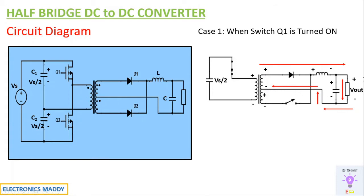If you carefully observe, you're getting a DC voltage at the output terminal. Our desired operation is achieved — we are using a DC voltage source and we are getting a DC voltage at the output terminals. Now what happens if we do the same thing with respect to switch Q2?